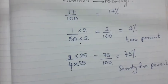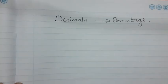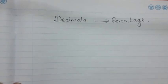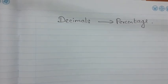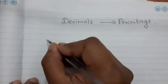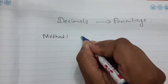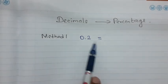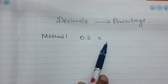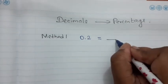Now do you understand how to convert a fraction to a percentage? Let's move on to the last topic: converting decimal numbers to percentages. We are going to do this in two methods, so you can use whichever method feels easier for you. In Method 1, we first convert the decimal number — for example 0.2 — into a fraction.